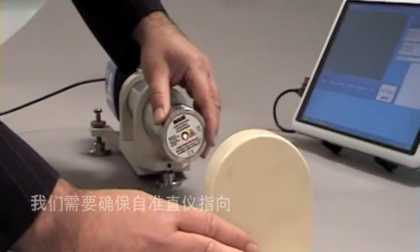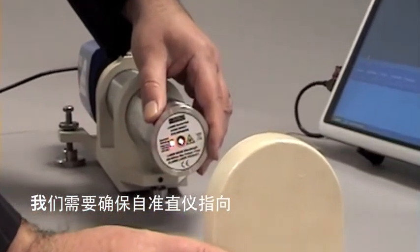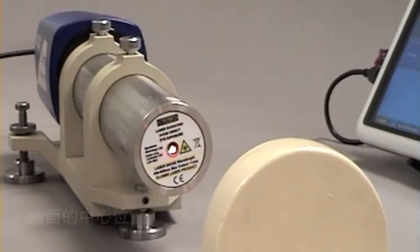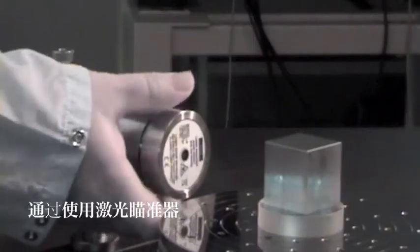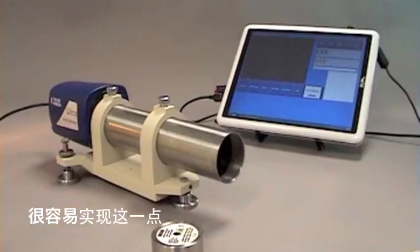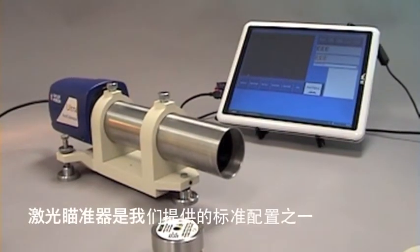Alignment. What we need to make sure is that the autocollimator is pointing at the centre of the mirror. This is easily done by using the laser sighting aid which is provided as standard with the instrument.